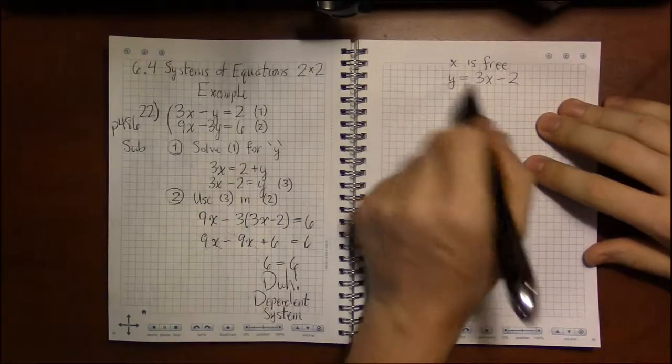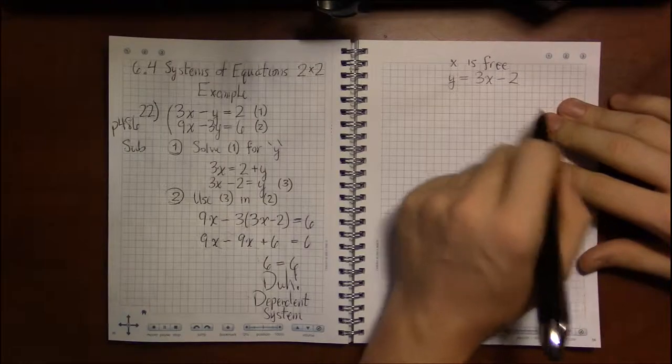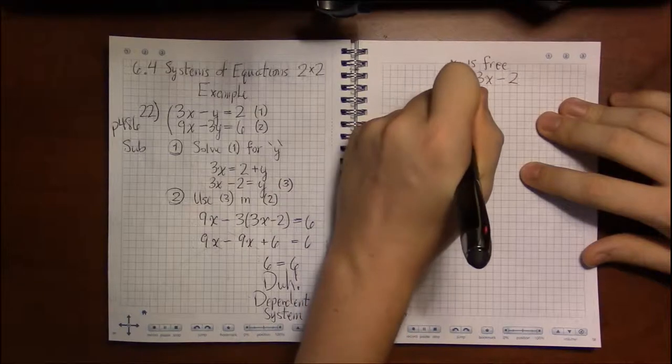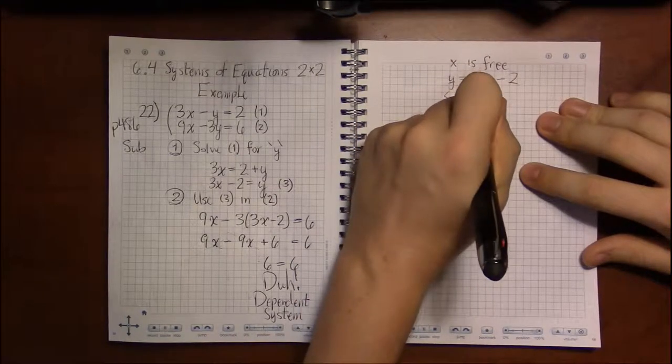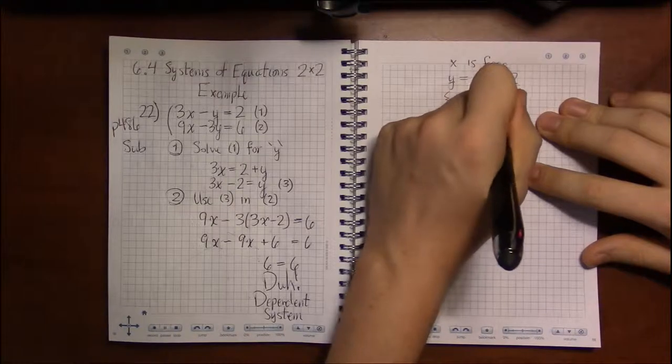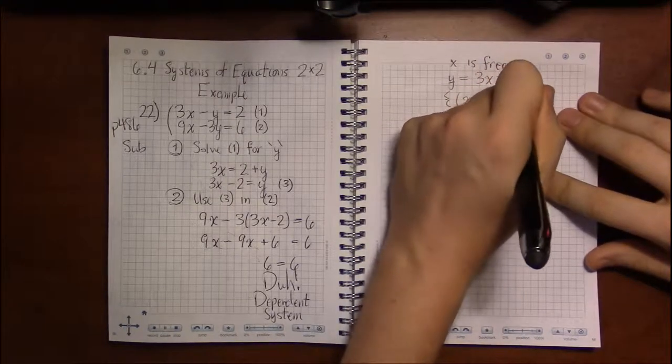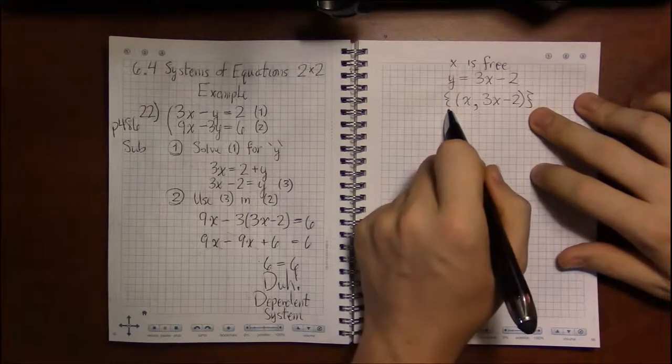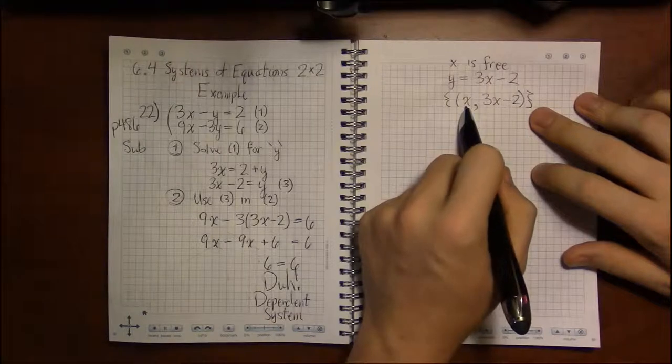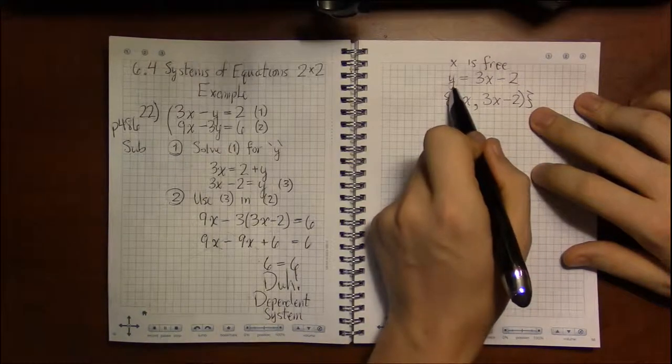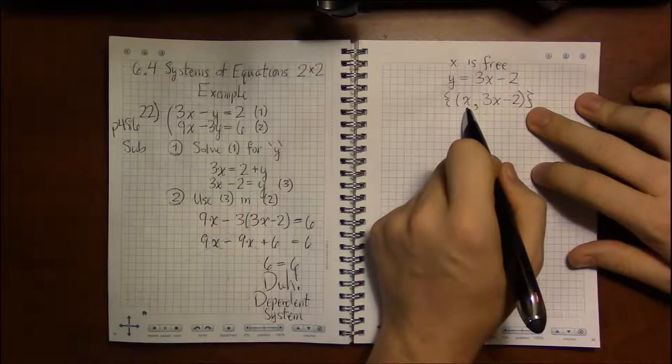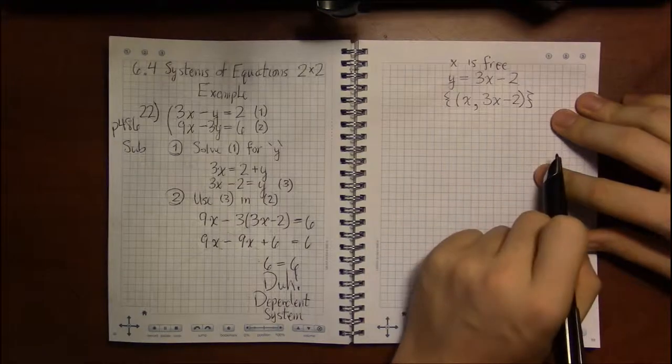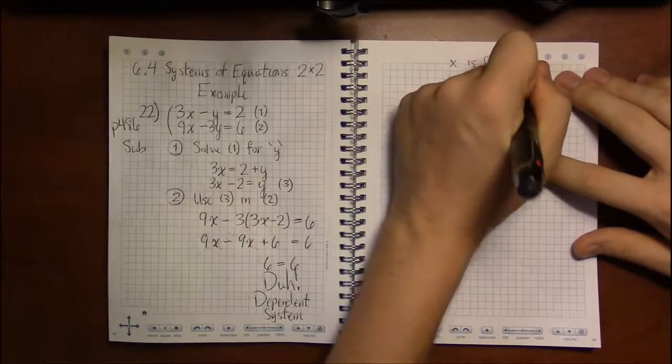This is a perfectly acceptable way of writing the answer. The way the book is going to write the answer is in this rather awkward notation: the collection of points where x is whatever you choose and y is three times your chosen value of x minus 2. That's how you're supposed to read this.